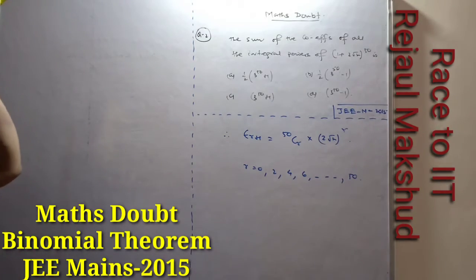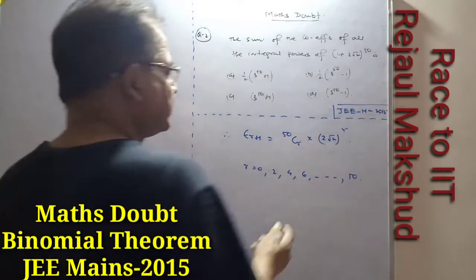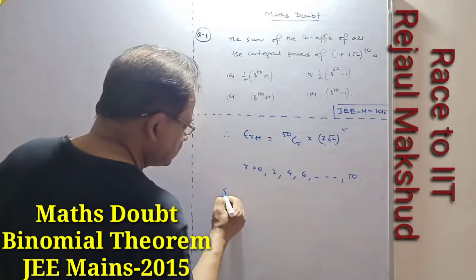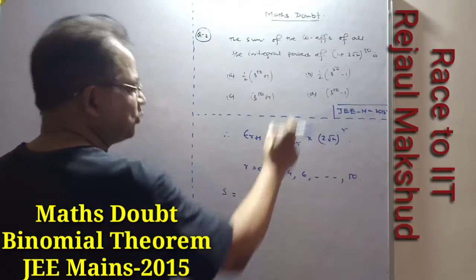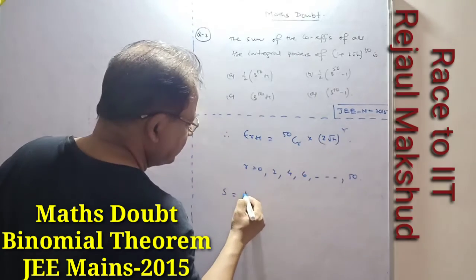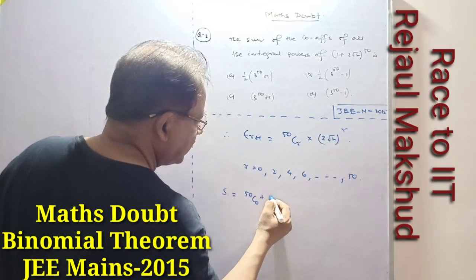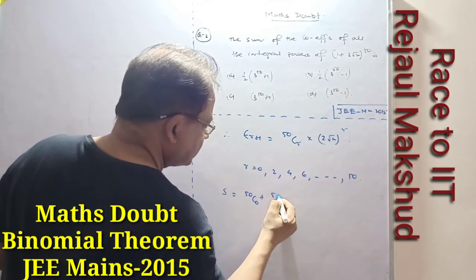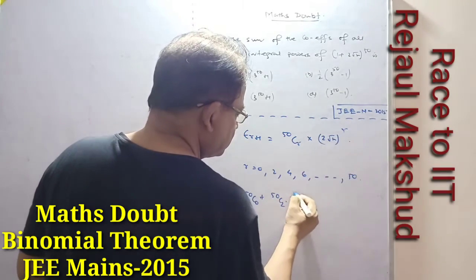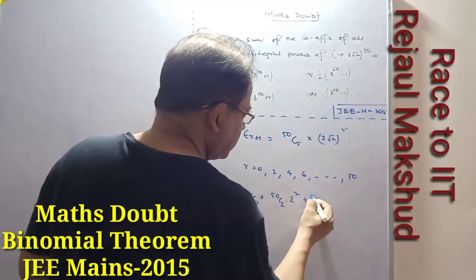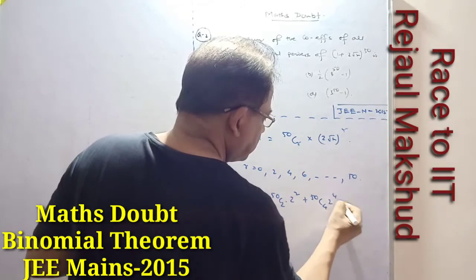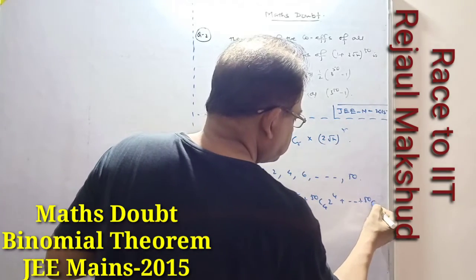So the integral powers come when r is equal to those even values. So the sum of the coefficients is: 50C0 + 50C2·2^2 + 50C4·2^4 and so on.